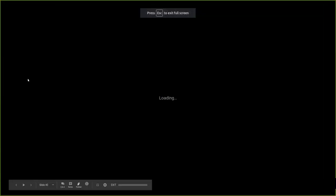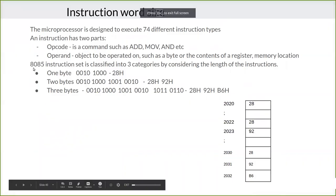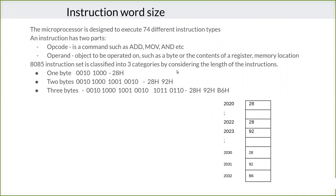The instruction set of 8085 can be classified based on its length into three categories: one-byte, two-byte, and three-byte.